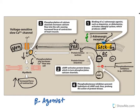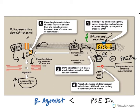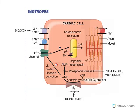Cyclic AMP is metabolized by phosphodiesterase enzymes to AMP. Phosphodiesterase inhibitors block this metabolism, thereby increasing cyclic AMP levels. The increased cyclic AMP activates PKA, which phosphorylates the calcium channel, opens it, and increases calcium levels. So both phosphodiesterase inhibitors and beta agonists act on the same downstream mechanism — one as an enzyme inhibitor, the other as a receptor agonist.